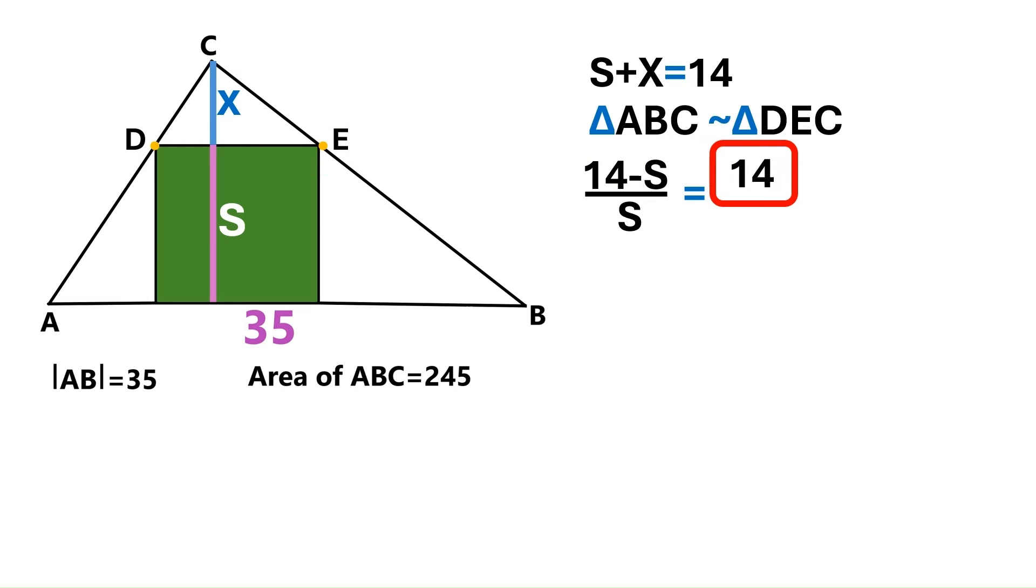On the other side of the equation we have 14, the height of the triangle ABC, divided by 35, the base. Let's quickly divide this side by 7 and we get 2 over 5.